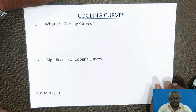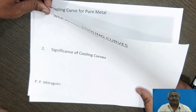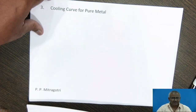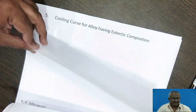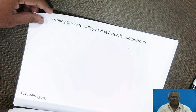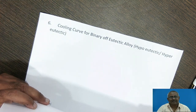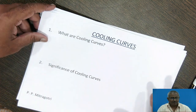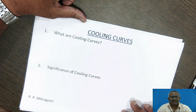In this session, we are going to discuss what are cooling curves, significance of cooling curves, then cooling curve for pure metals, cooling curve for solid solution alloy, as well as cooling curve for alloy having eutectic composition and cooling curve for binary off-eutectic alloy. We will begin our discussion with the definition of cooling curve.